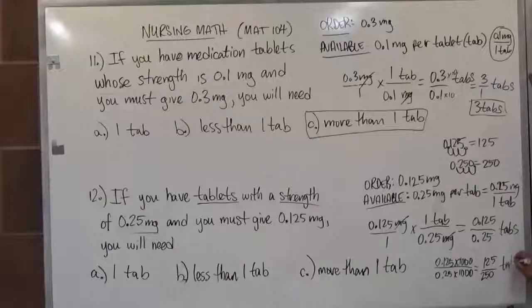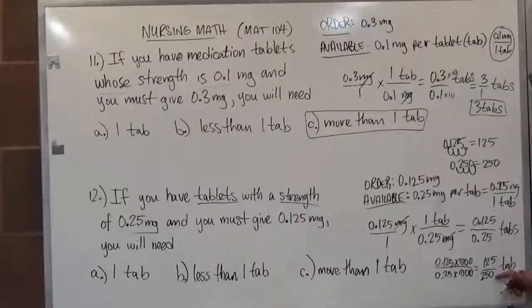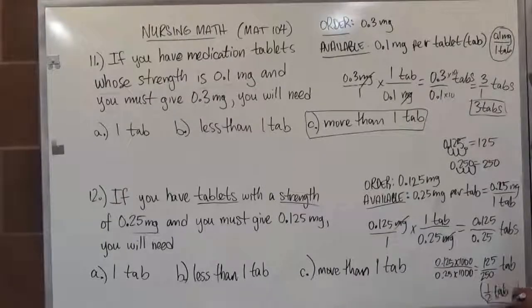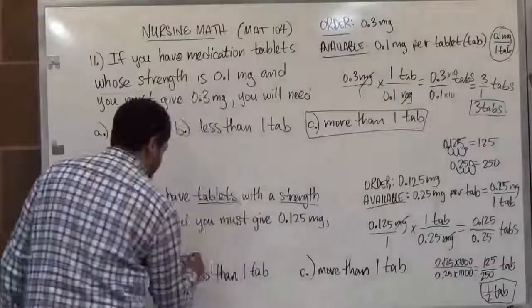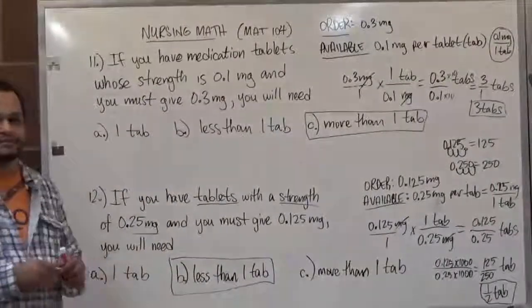This is in tab form, and we see it divides out perfectly: 1 times 125 is 125, and 2 times 125 is 250 — so it's going to be half a tab. Half a tab means we're going to need less than one tab. So our solution for number 12 is B.